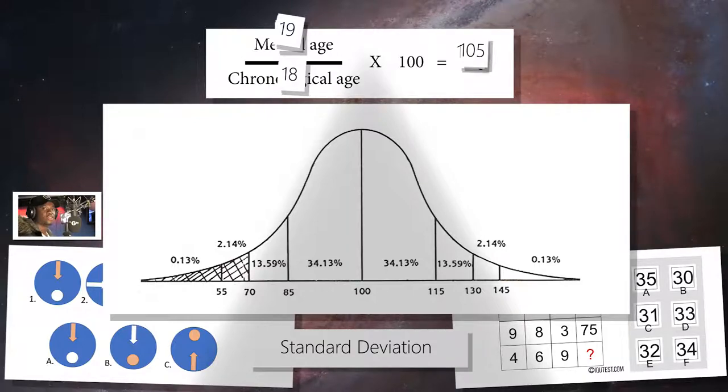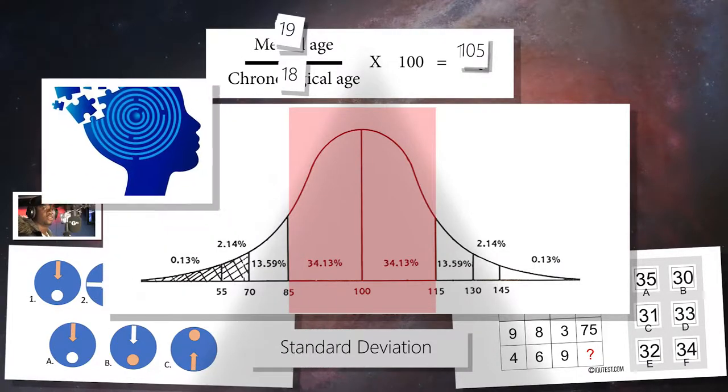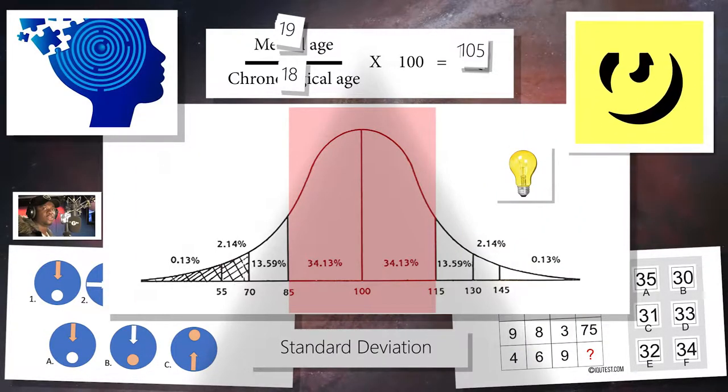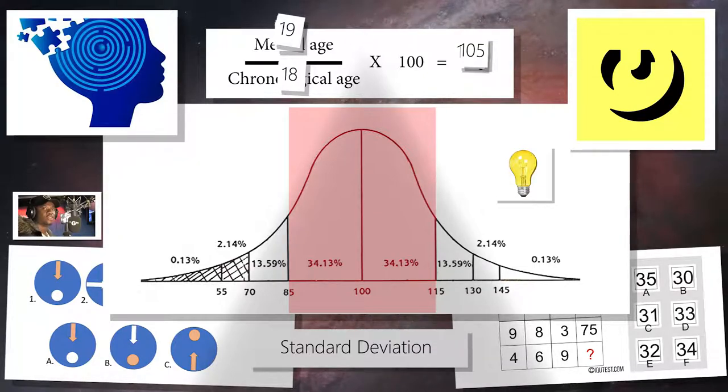According to the graph, two-thirds of humans score between a 15 point difference from 100, which means two-thirds of us have an IQ between 85 and 115. Anyone that scores below 85 will be considered mentally disabled. Scoring between 115 and 129 would mean you're exceptionally bright. Anything higher would indicate that you are a natural genius. If you want to try it out for yourself, I have links to IQ tests in the description.